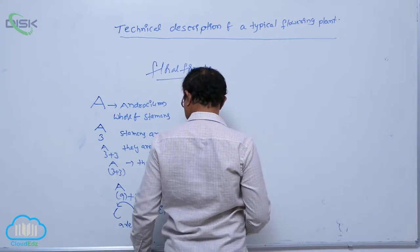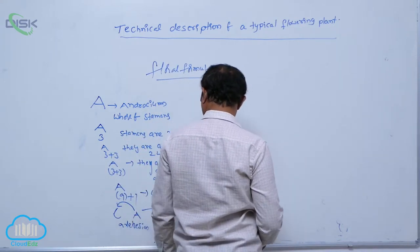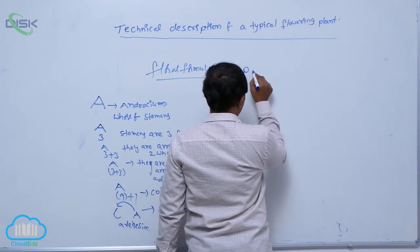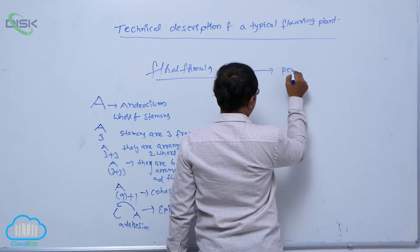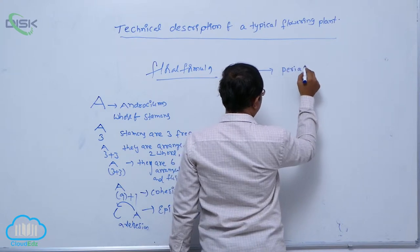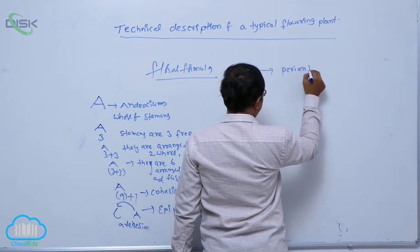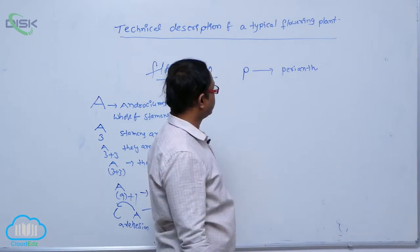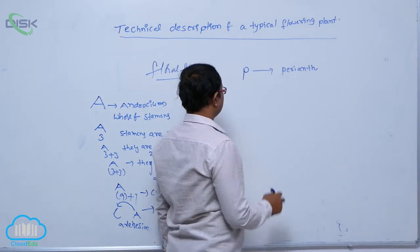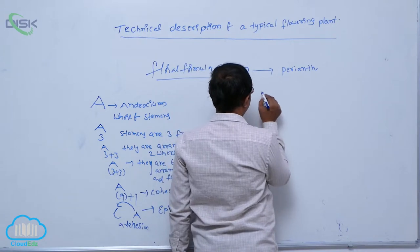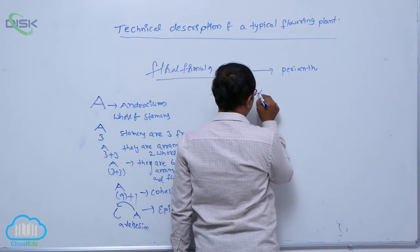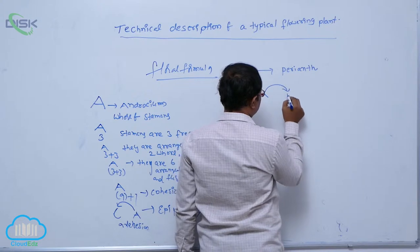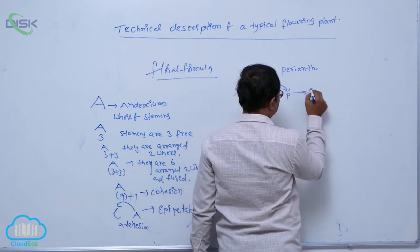If it is an apetalous condition, then P indicates the perianth. If sepals and petals both are the same and not differentiated, that is known as the perianth. For example, if stamens are attached to that perianth, that is known as the epiphyllous condition.